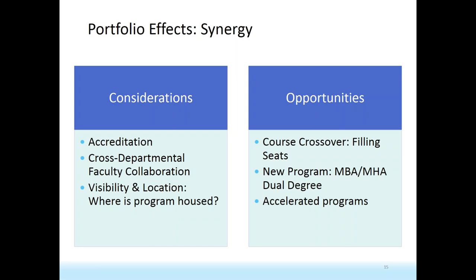We're also finding opportunities with accelerated programs. Between 10 and 12 undergraduate students per year, in their senior year, can take up to 12 graduate courses that count for both undergraduate requirements and their graduate program. We have students in biology, accounting, health administration, and HR rolling right into online graduate programs. This is cross-discipline, cross-college — undergrad biology students entering the College of Professional Studies — generating new credit hours without necessarily adding new faculty lines, just filling seats.